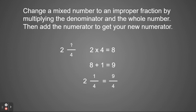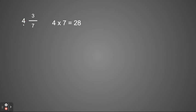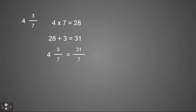It kind of makes a little semi-circle. Let's look at some more examples. I have four and three sevenths. I'm going to start by multiplying my denominator times my whole number. Four times seven equals twenty-eight. Then I'm going to take that number and add it to my numerator. Twenty-eight plus three equals thirty-one. Now thirty-one becomes my new numerator, and four and three sevenths is equal to thirty-one sevenths.